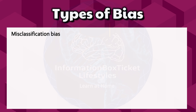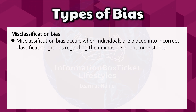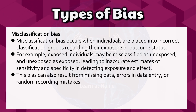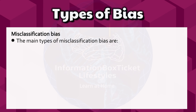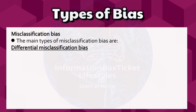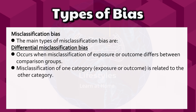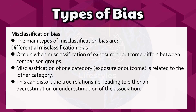Misclassification bias occurs when individuals are placed into incorrect classification groups regarding their exposure or outcome status. For example, exposed individuals may be misclassified as unexposed, and unexposed as exposed, leading to inaccurate estimates of sensitivity and specificity. This bias can also result from missing data, errors in data entry, or random recording mistakes. Differential misclassification bias occurs when misclassification of exposure or outcome differs between comparison groups, and can lead to either an overestimation or underestimation of the association.